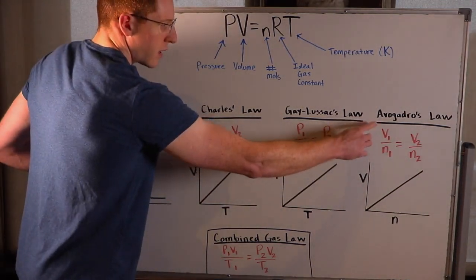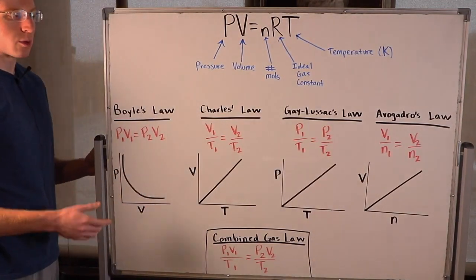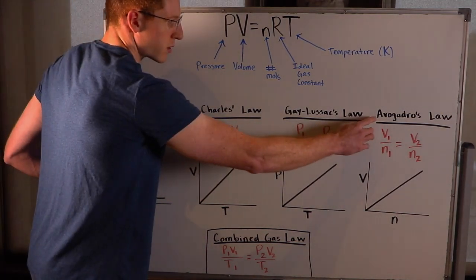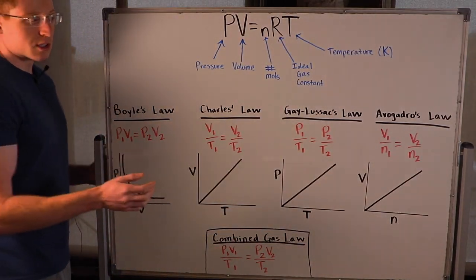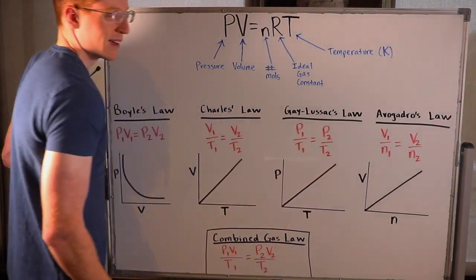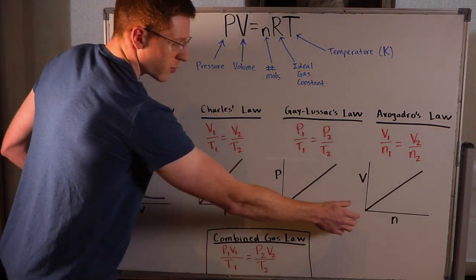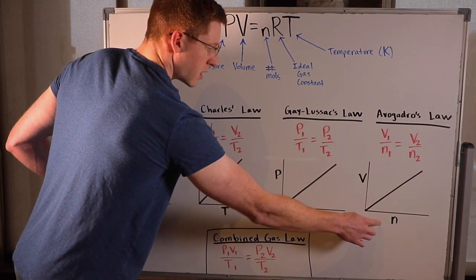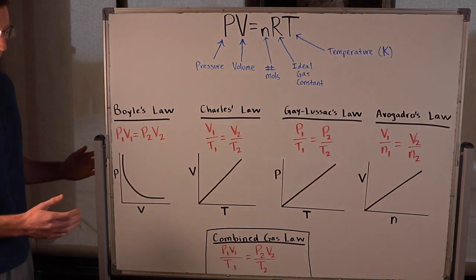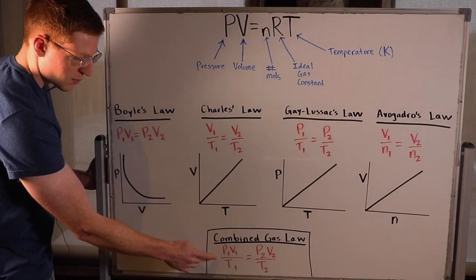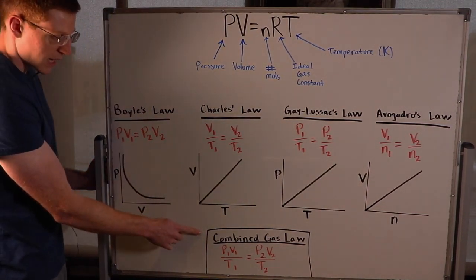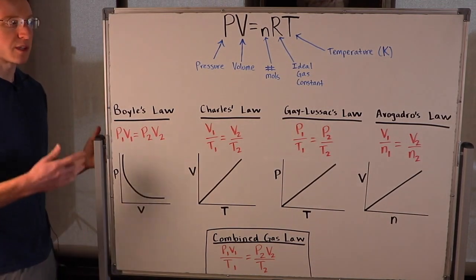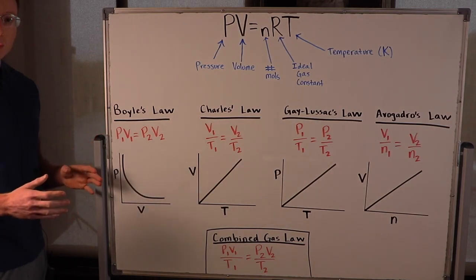Avogadro's law says the initial volume divided by the initial number of moles equals the final volume divided by the final number of moles. A way to remember this: Avogadro looks like avocado, and avocados are very nutritious. The graphical relationship is again directly proportional — volume on the y-axis, number of moles on the x-axis. Finally, if you have a problem involving a change in pressure, volume, and temperature, you can use the combined gas law — remember it as 'peas and vegetables on the table.'